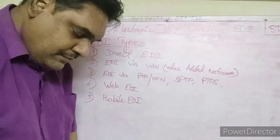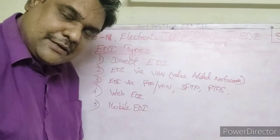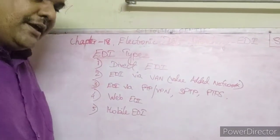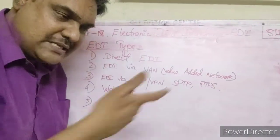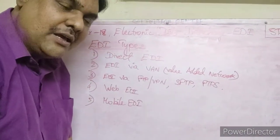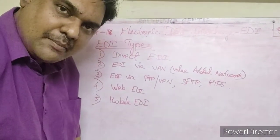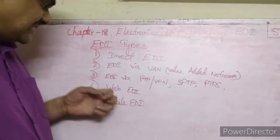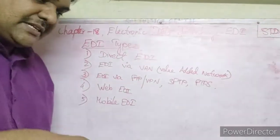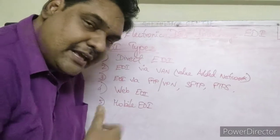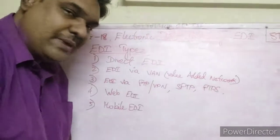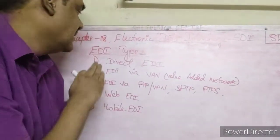Next, Web EDI. What is Web EDI? Dedicated websites are used. If you log in to those websites, you can upload your business documents and your partners can download those business documents. That is Web EDI. Next, Mobile EDI. Similar to Web EDI but you use a mobile phone and an app. It is called Mobile EDI. So these are the types of EDI.